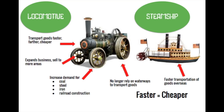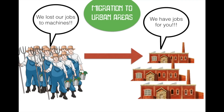Because the steam engine is so effective and efficient, we put it to work outside the factory. The locomotive — essentially a steam engine on wheels — allows us to transport goods faster, farther, and cheaper, enabling sales to more areas and driving down production costs. The locomotive creates a brand new industry and increases demand for coal, steel, iron, and railroad construction. We also put the steam engine on a boat to make the steamship, again transporting goods faster and cheaper.